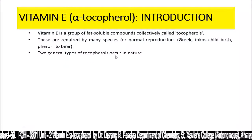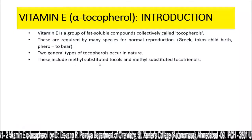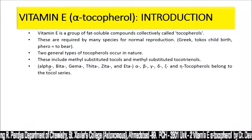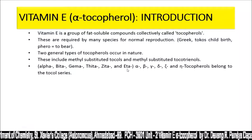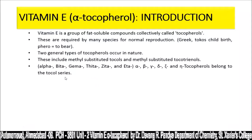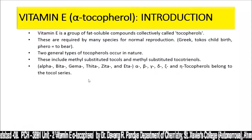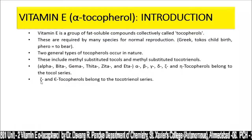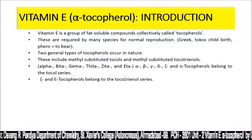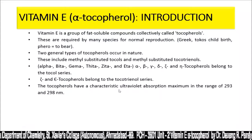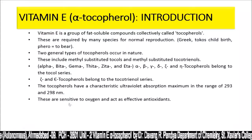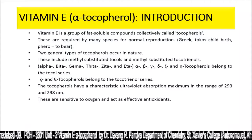Two general types of tocopherols occur in nature: methyl-substituted tocols and methyl-substituted tocotrienols. Alpha, beta, gamma, theta, eta, and zeta are the symbols used. Tocopherols belong to the tocol series, while zeta and eta tocopherols belong to the tocotrienol series. Tocopherols have a characteristic ultraviolet absorption maximum in the range of 293–298 nanometers.